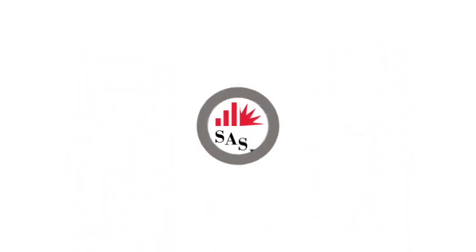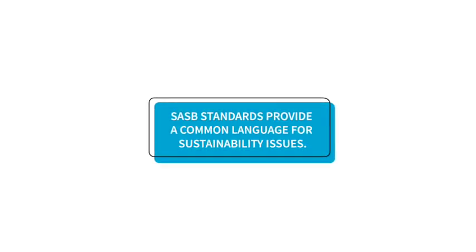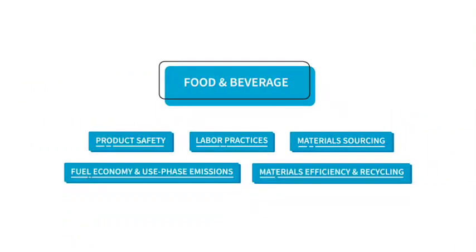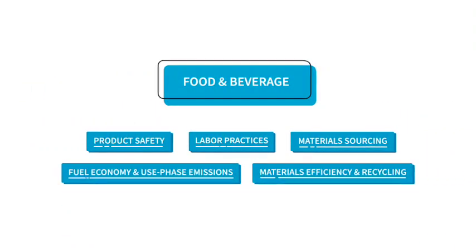SASB standards provide a common language for companies and investors to talk about sustainability issues. Available in 77 industries, they identify the subset of issues that impact the financial performance of each of those industries.